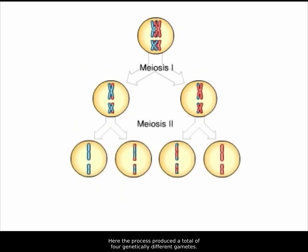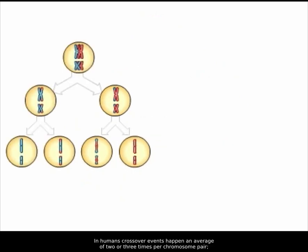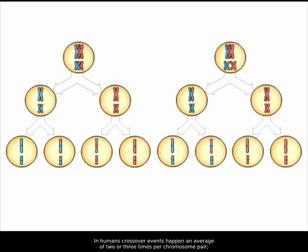Here the process produced a total of four genetically different gametes. There are many ways crossing over can occur. In humans, crossover events happen an average of two or three times per chromosome pair, greatly increasing the variation among eggs and sperm.